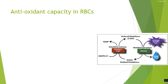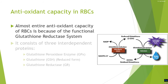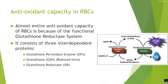The antioxidant capacity within the RBCs is wholly and solely dependent on a system called the glutathione reductase system. This system contains three interdependent proteins, two of which are enzymes: glutathione peroxidase (GPx), which uses reduced glutathione to neutralize reactive oxygen species, and glutathione reductase, which reduces oxidized glutathione back to its reduced form utilizing NADPH.